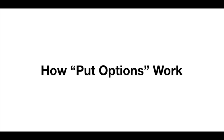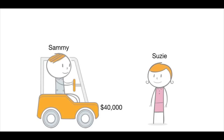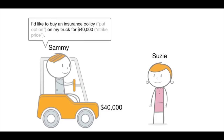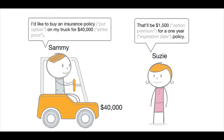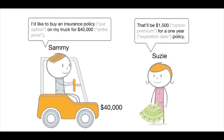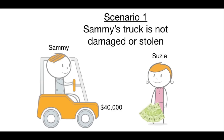Now let's look at how put options work by revisiting Susie and Sammy. Sammy owns a truck worth $40,000 and is concerned it might be damaged in an accident or stolen. So Sammy decides to buy a zero-deductible insurance policy — a put option on the truck — for the full amount of $40,000, which is the strike price, from Susie's auto insurance company. Susie charges him $1,500 — the option premium — for a one-year policy, with one year being the expiration date.